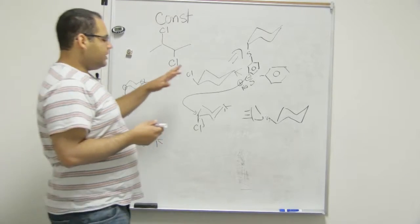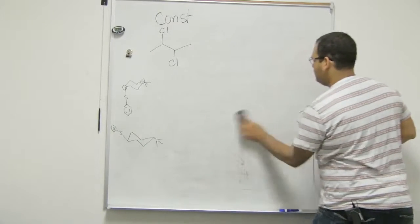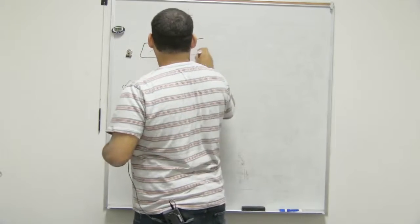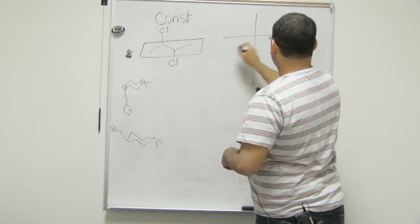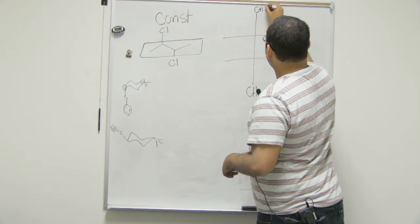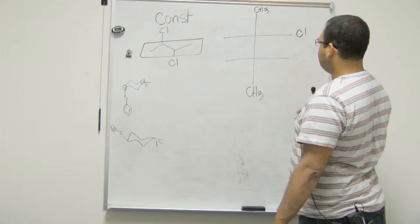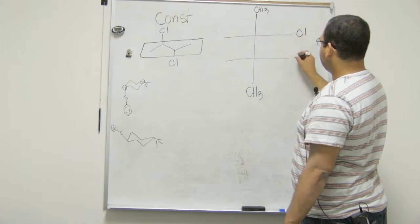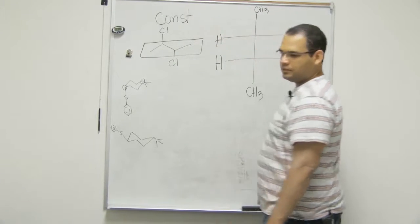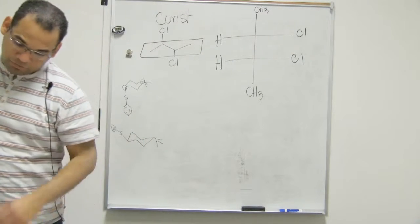So remember, if we are doing Fischer projection, we grab this one as our chain, right? Yeah. Has a CH3 here. A CH3 there. And then you say Cl. And a Cl on this side. Yeah. Well, can you understand the way I drew them? Yeah, but this is not a Fischer projection.